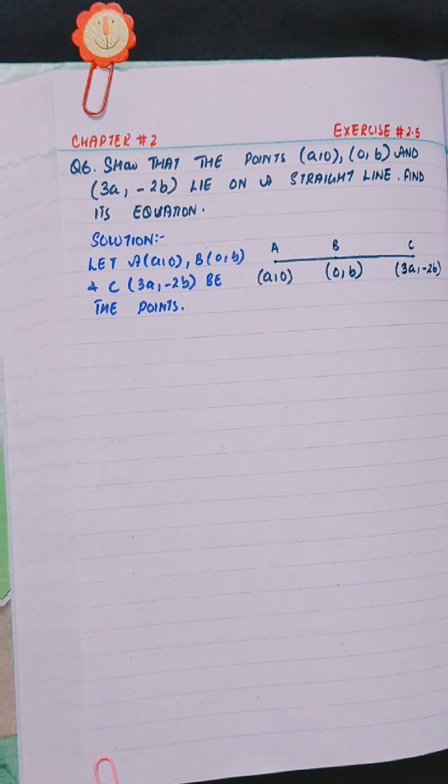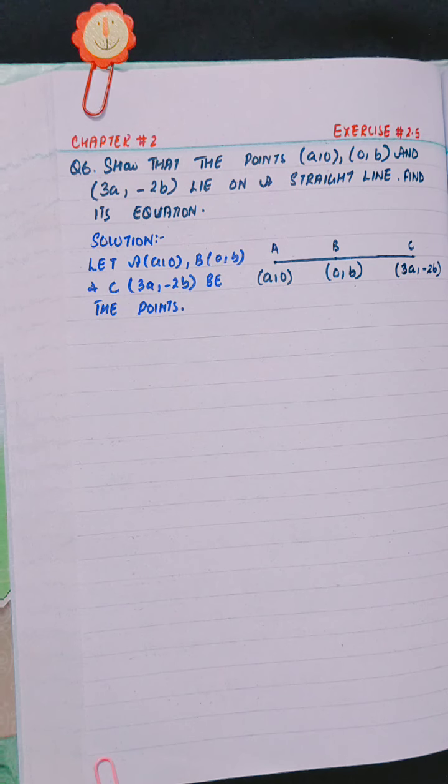Question is, show that the points A(a,0), B(0,b) and C(3a,-2b) lie on a straight line and find its equation.